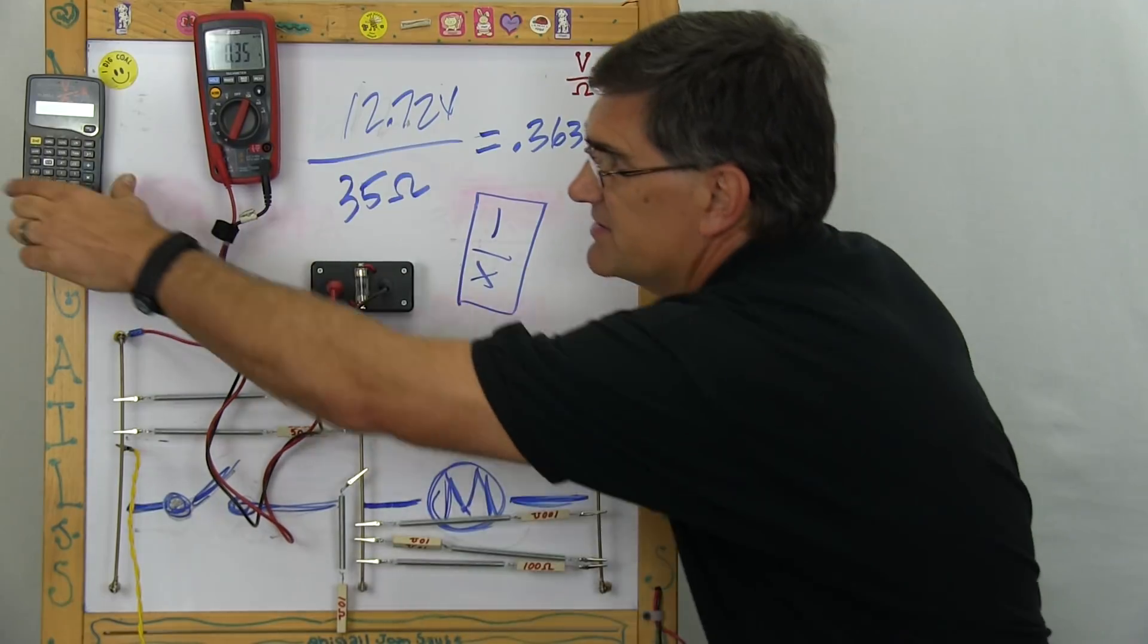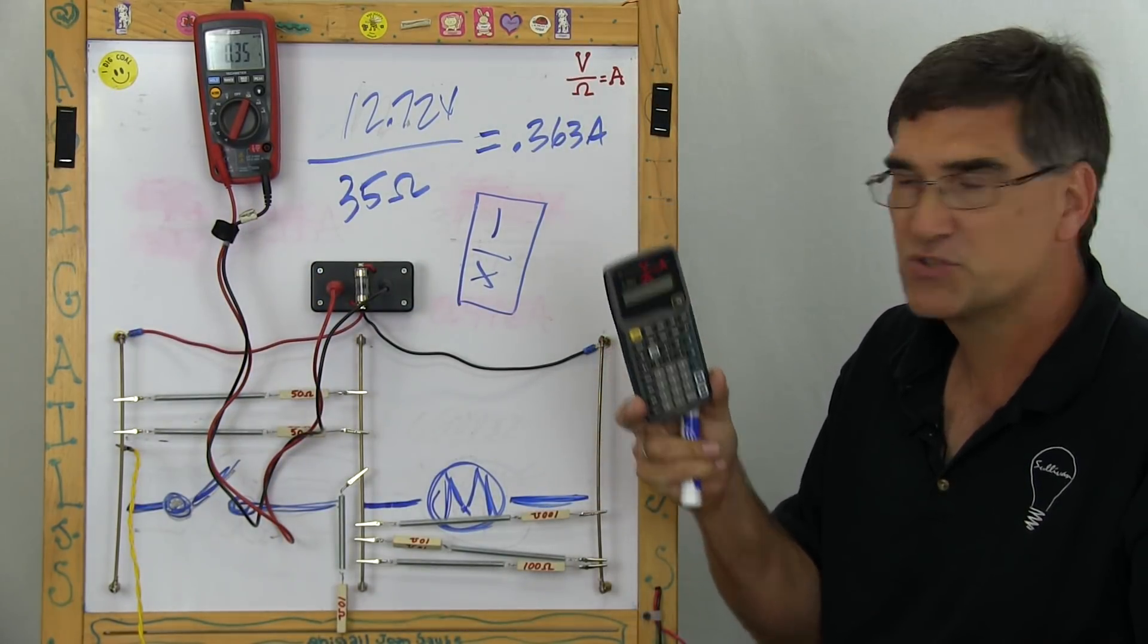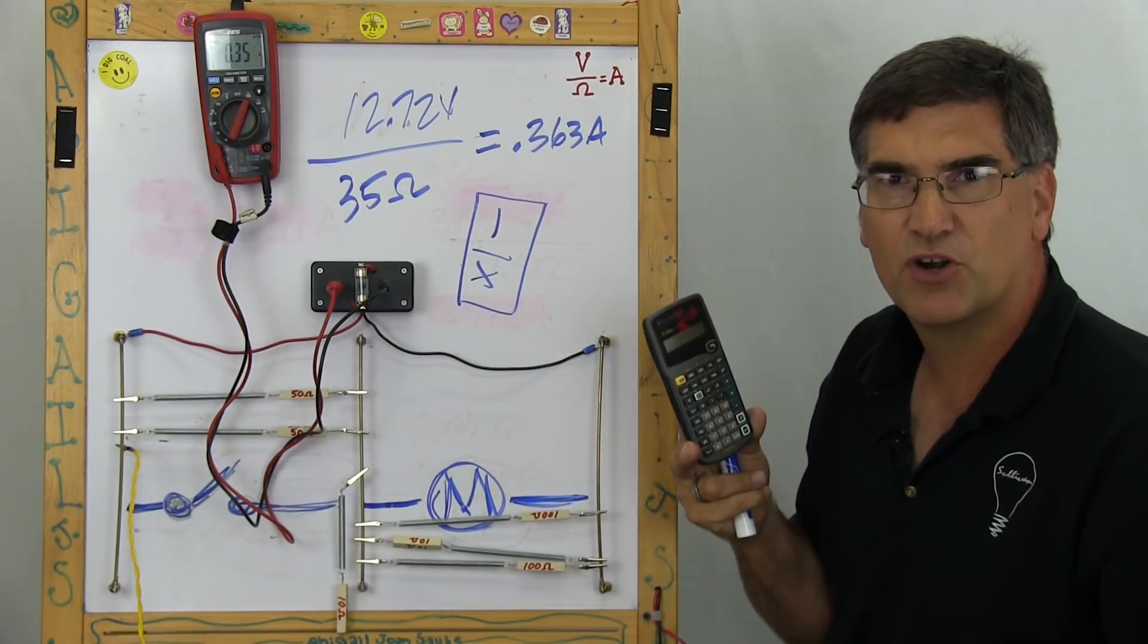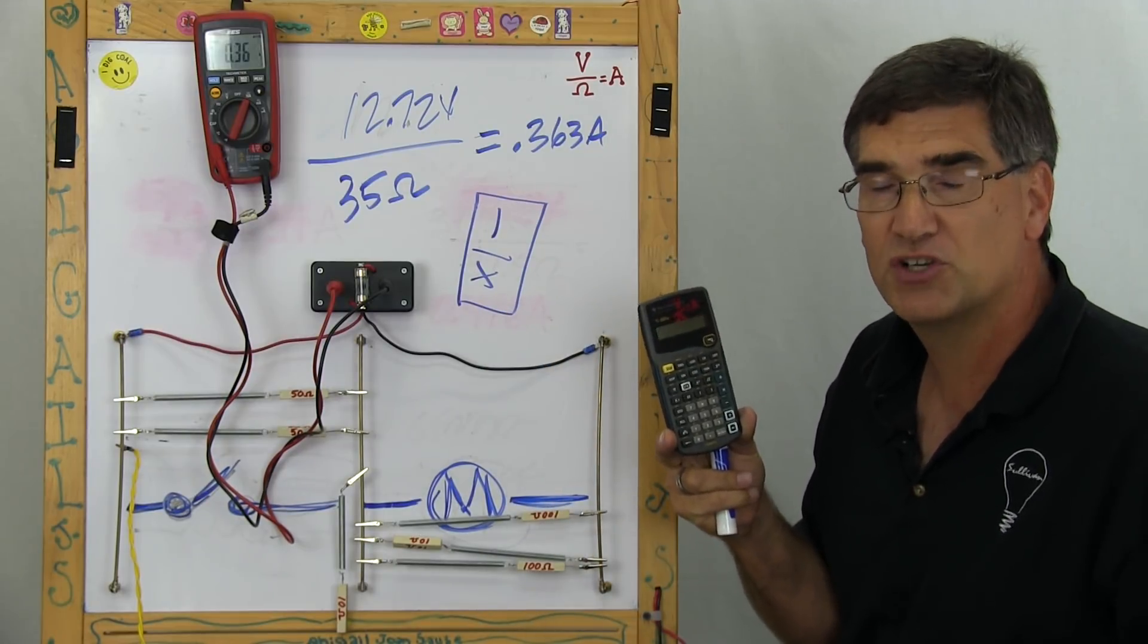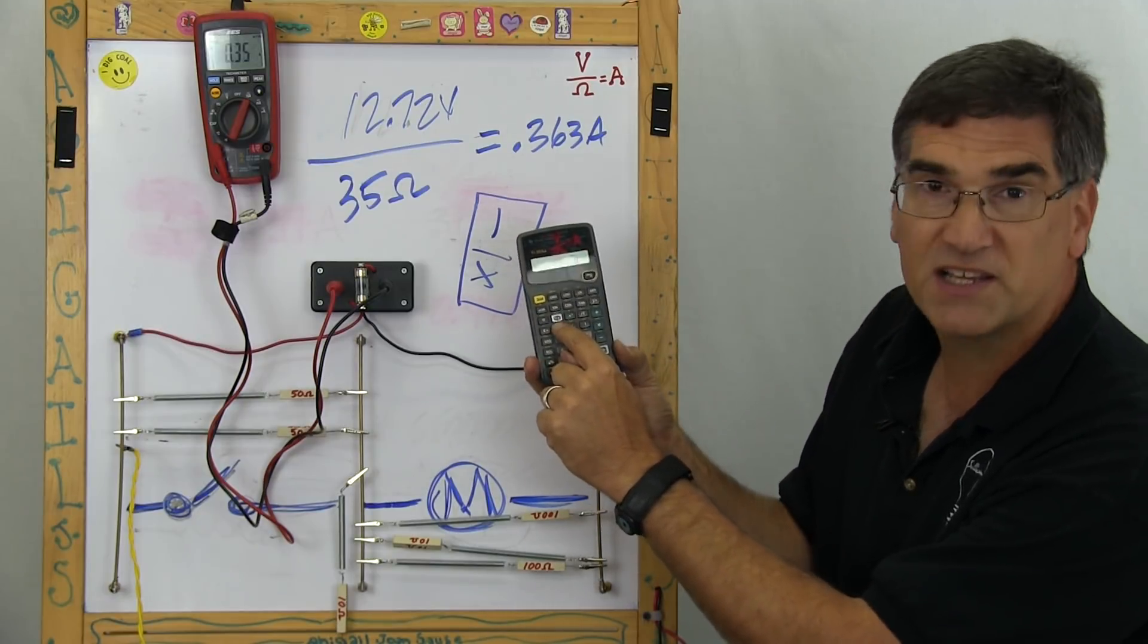At any rate, my advice is to use the one over x button, the inverse button. Because we tell them that resistance is inversely proportional to, or current is inversely proportional to resistance. And right here, there's a one over x button.